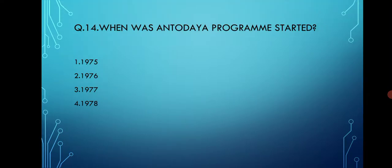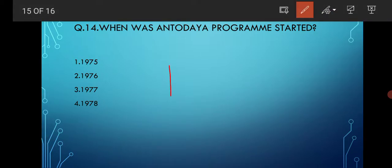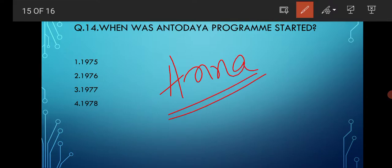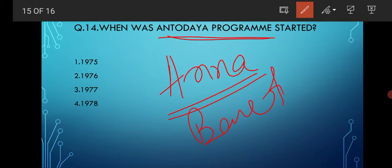When was the Antyodaya Program started? This is a very important rural development program — Antyodaya and later Anna Yojana are all related. Please go through these programs to understand their objectives, beneficiaries, and aims. Options are 1975, 1976, 1977, and 1978. The correct option is option number three, that is 1977.